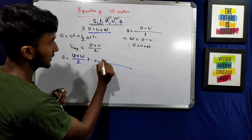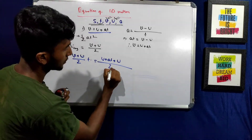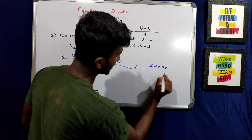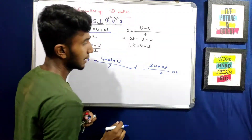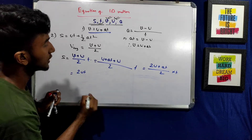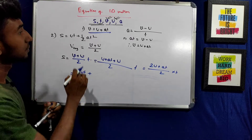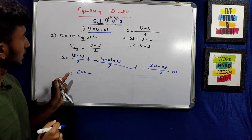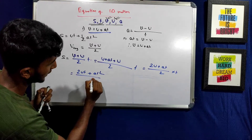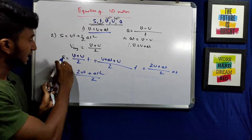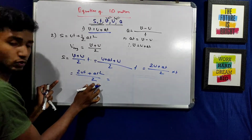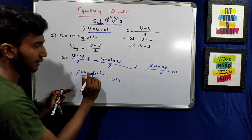I'm going to show that v equals u plus at. So: u plus at plus u, divided by 2, into T. That gives 2U plus at, by 2, into T. Then 2ut plus at squared by 2. So S is equal to ut plus half at squared. The equation is S equals ut plus half at squared.